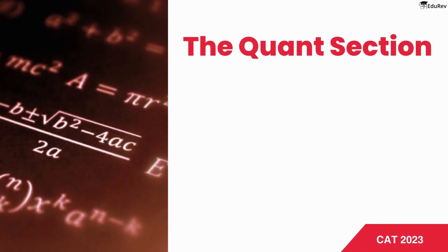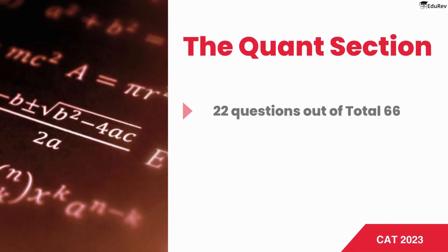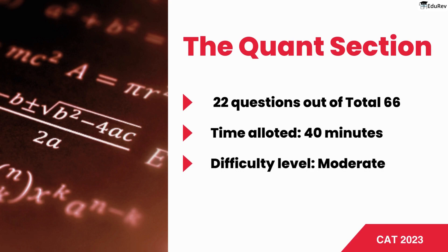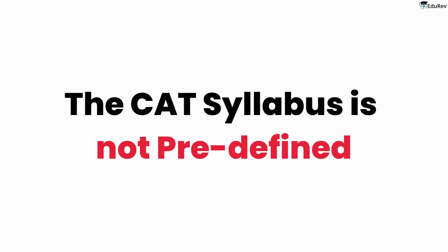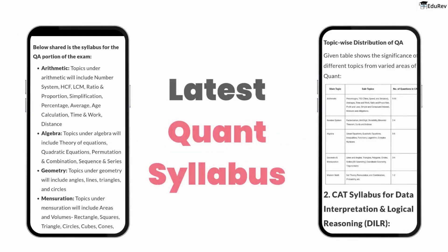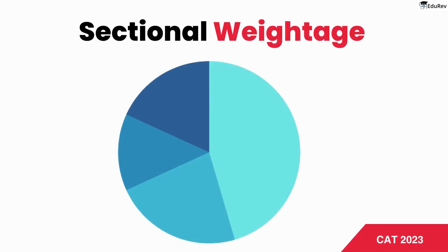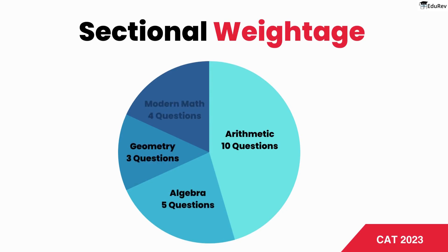To start, let's take a closer look at the QAN section of the CAT exam. The QAN section consists of 22 questions out of 66, with a time allotment of 40 minutes. The difficulty level is moderate. For this section, it's essential to have a good understanding of the syllabus and weightage to perform well. Unlike other exams, the CAT QAN syllabus is not predefined, which makes it challenging to prepare. However, after analysing previous years' papers, EduRev experts have prepared an extensive list of topics for the QAN syllabus. In terms of weightage, the QAN section typically has 10 questions from arithmetic, 5 from algebra, 3 from geometry, and 4 from modern maths.